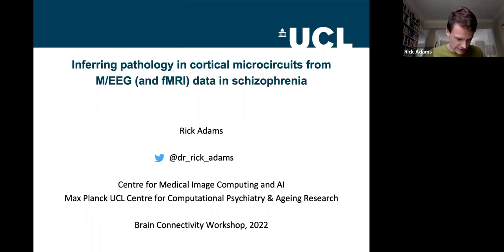So this talk is essentially what Richard is trying to do with epilepsy, but applied to schizophrenia and with slightly less complex figures. Essentially, what I'm trying to do is not look at macroscopic connectivity in the disorder, but infer pathology in cortical microcircuits from MEG data and EEG data and a little bit of fMRI data in schizophrenia.